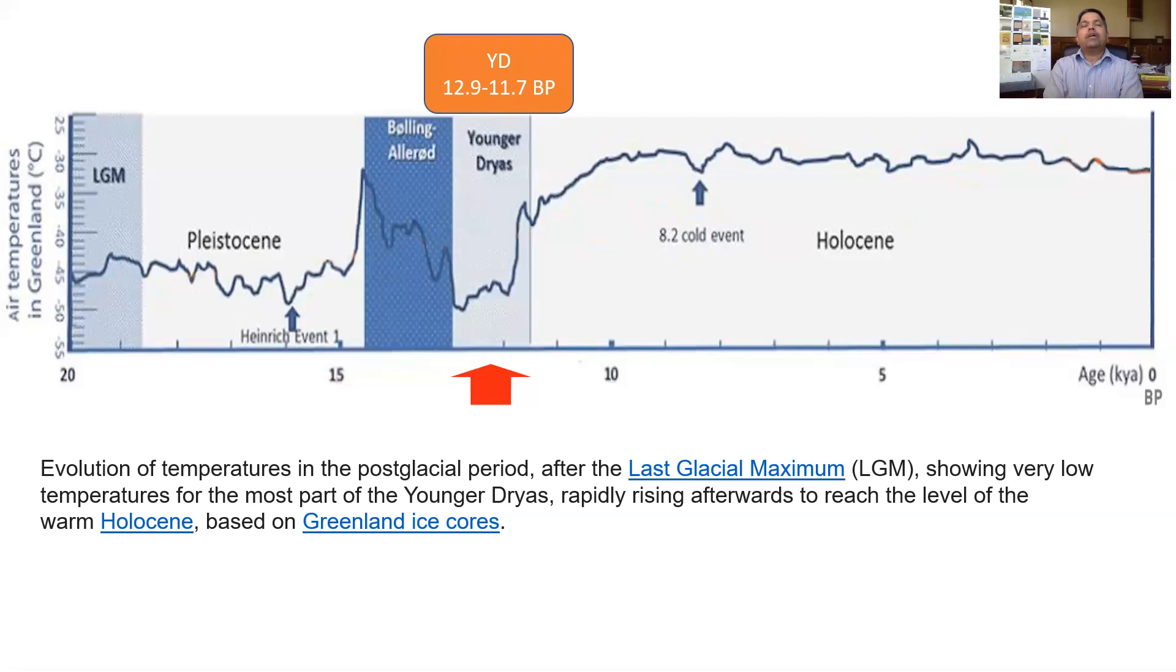Younger Dryas is known as a period from 12,900 BP before present to 11,700 BP before present. 11,000 to 9,700 BC is Younger Dryas. Against this, let us see where does the Mahabharata and Ramayana fit. Before that, let's go beyond what is shown on the graph.